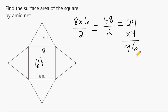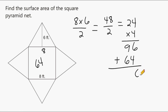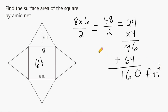Now we take the area of the four triangular surfaces, which is 96, and add that to the area of the square surface, which is 64. That gives us a total of 160 square feet. Notice that with this example we did not involve any formula — we just based everything off our knowledge of squares and triangles.